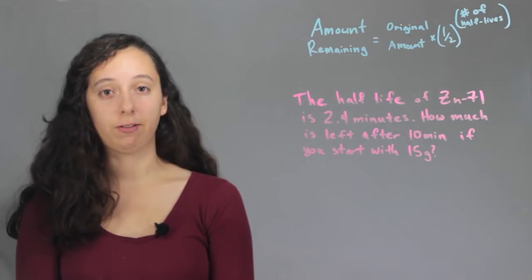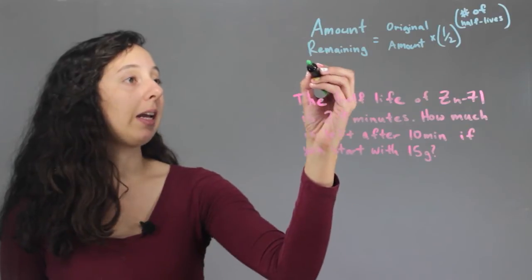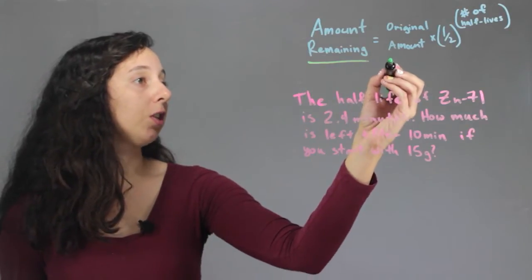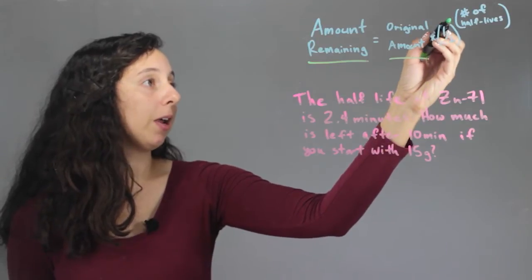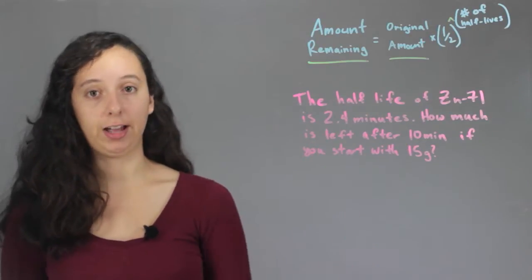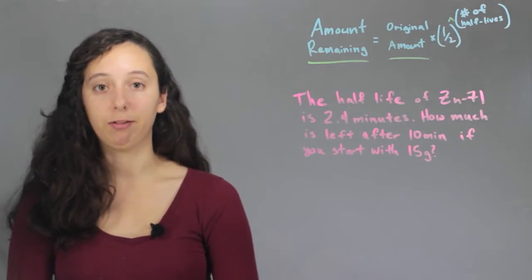So, the equation we use to figure out half-life and how much we have left is: the amount remaining equals the original amount times one-half to the power, so it's an exponent, to the power of the number of half-lives. Alright, so with that equation, let's take a look at a typical half-life problem.